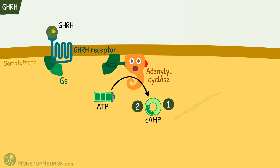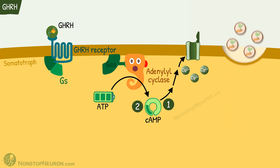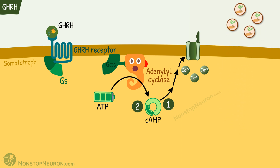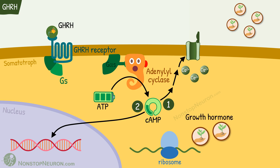The increased cytosolic cAMP level produces two effects. In the short term, it opens calcium channels that lead to inflow of calcium, and increased calcium level triggers release of growth hormone that was already stored in vesicles. In the long term, it stimulates gene transcription, which results in the synthesis of more growth hormone. Thus, growth hormone releasing hormone increases both the synthesis and release of growth hormone.